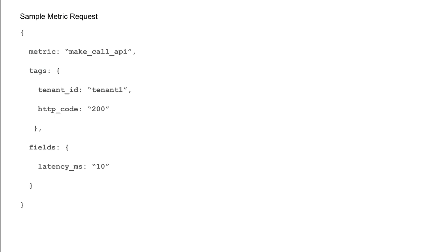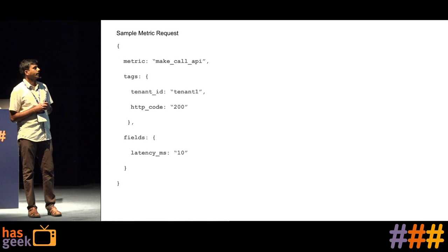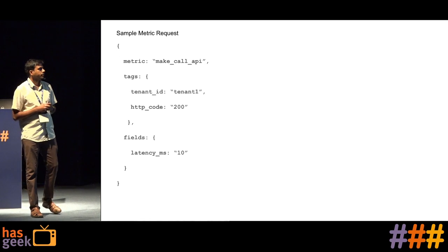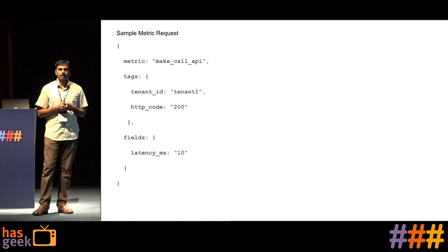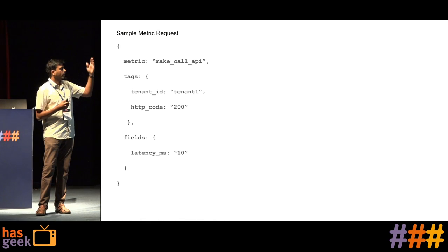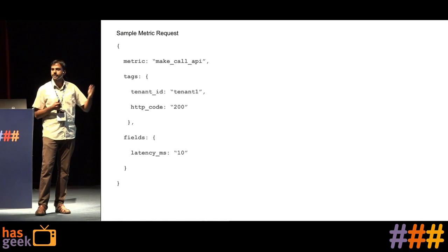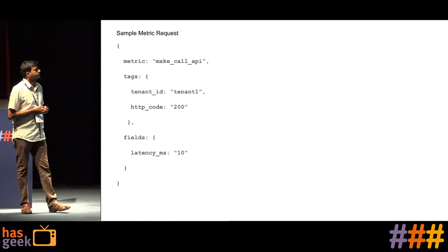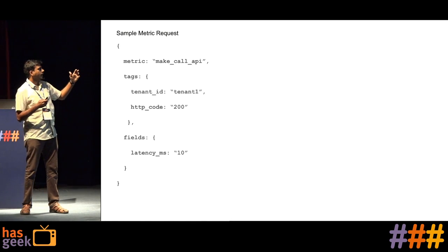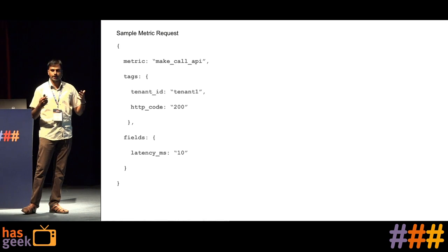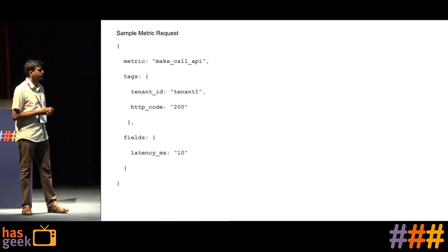Fields capture the actual data that we are interested in. In this case, we are capturing the latency of the make call API request in milliseconds. Typically, you do aggregations on field values — for example, find the average latency of the make call API request for a specific tenant. So that's the difference between tags and fields: using tags you can search the metrics, and fields are the actual data on which you want to do aggregations, like averages or percentiles.